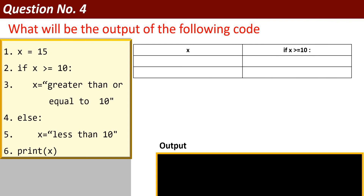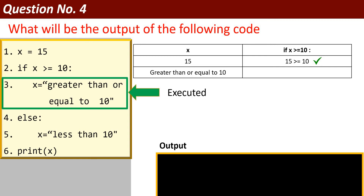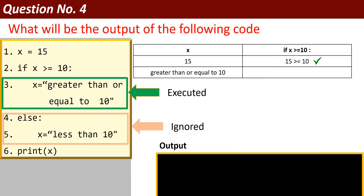Now this is the fourth program. x equals 15. I am going to test the condition: if x is greater than or equal to 10. That means 15 is greater than or equal to 10 — this is true. In case of true, line number 3 will be executed. This is a string assignment to variable x: x will get the value 'greater than or equal to 10'. The else part will be ignored because the first condition is true. Finally, print x will display 'greater than or equal to 10'.